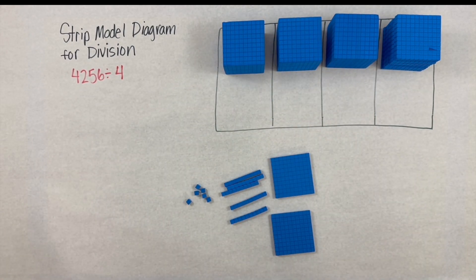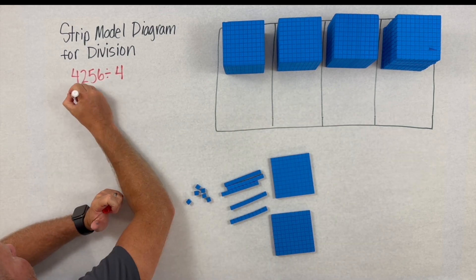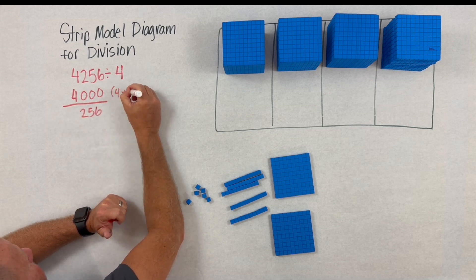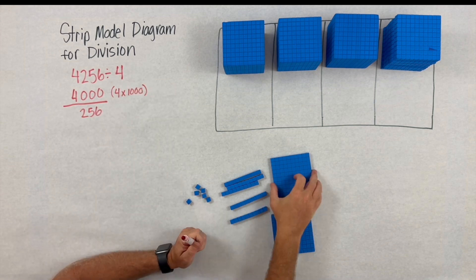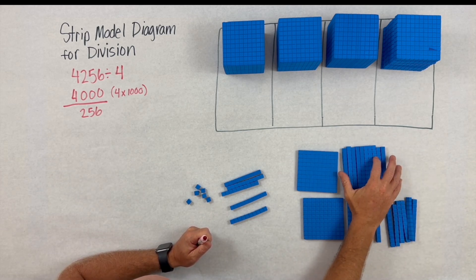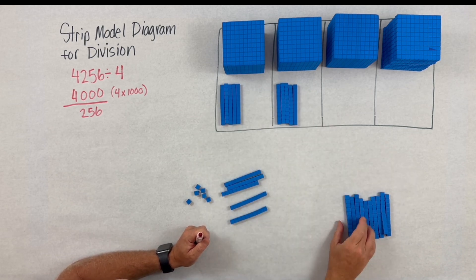On the left hand side, all we're doing is keeping a running total for what we still have left to share. With the hundreds plates, we'll need to decompose those because we only have two of them that we're sharing in four sections. So once we decompose those, we can now place five groups of 10 inside each box, which is where the 200 came from.